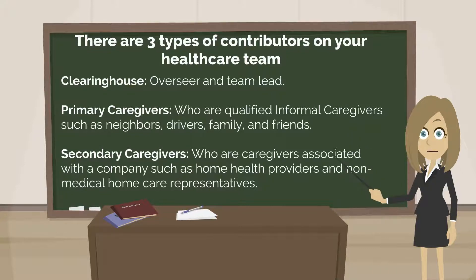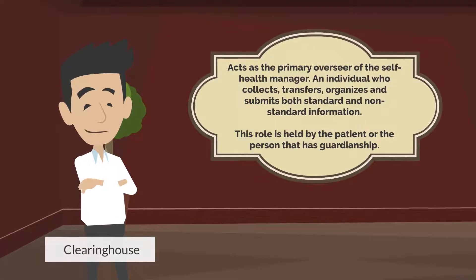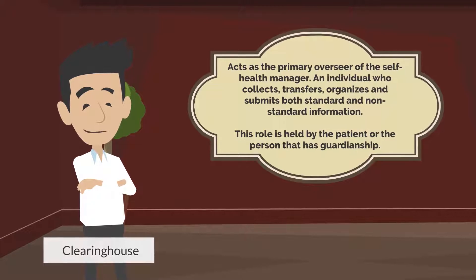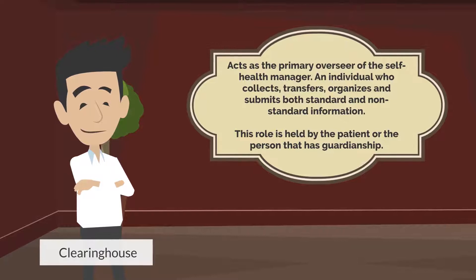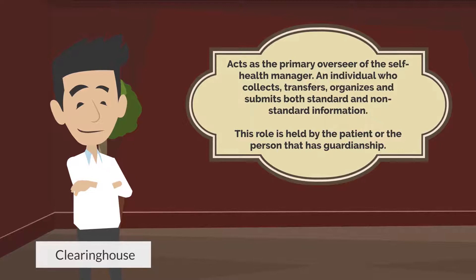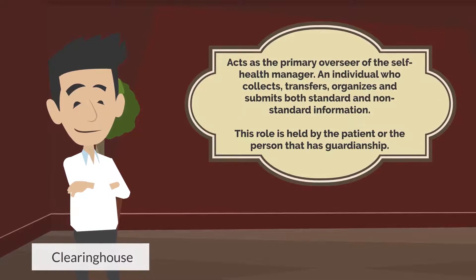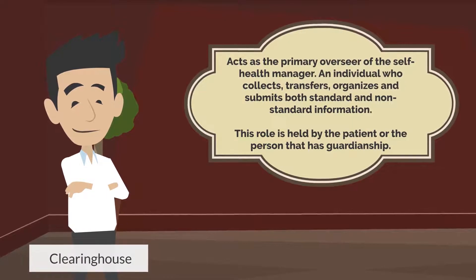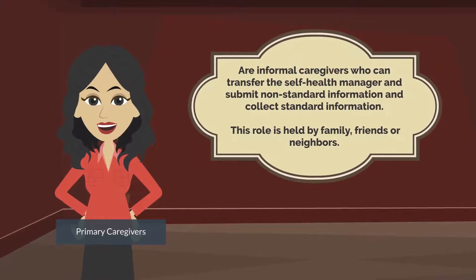Lastly are secondary caregivers, who are caregivers associated with a company such as home health providers or non-medical home care representatives. The clearinghouse is the contributor who may or may not have the lion's share of treatment participation, but is considered your team's leader and the primary overseer of the Patient Better program. This individual collects, transfers, organizes, and submits both standard and non-standard information. The clearinghouse could be either the patient or the person that has guardianship, or both.